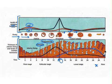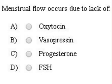lining is not maintained and it is lost in the form of menstrual flow, which we call the flow phase or menstrual phase. That is due to the lower level of progesterone. So in our question, 'menstrual flow occurs'...